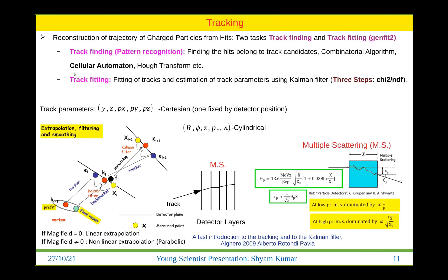The tracking is still in progress. In general we have six track parameters: x, y, z, px, py, pz — but one is fixed by the detector position, leaving five parameters in cylindrical coordinates. When a track passes through multiple detector layers it undergoes multiple scattering. The scattering angle theta_p depends on one over p (momentum) and on the thickness of the material. At low momentum, multiple scattering dominates; at high momentum, the material thickness term dominates.